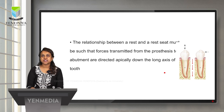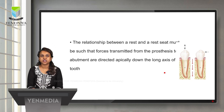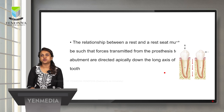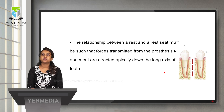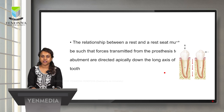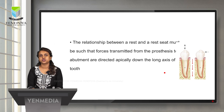The relationship between rest and rest seat must be such that forces transmitted from the prosthesis towards the abutment are directed apically down the long axis of the tooth. Forces should go towards the bone underneath the tooth, because bone is cancellous in nature and has the capacity to accept forces better than soft tissue. Our aim should be to transfer forces vertically along the long axis of the abutment tooth towards the bone, while lateral forces are prevented.